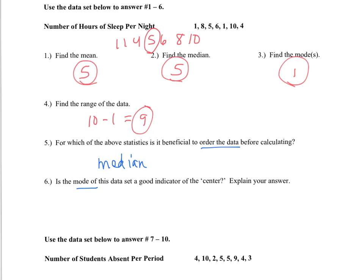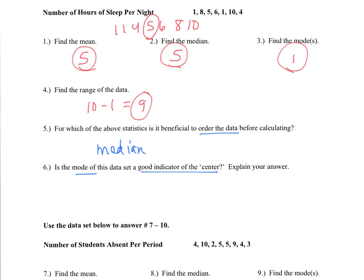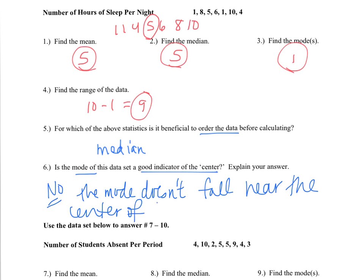Next question asks if the mode is a good indicator of center. And the answer to this would be no, it isn't. If we look at our data set and we look at our mode, our mode is 1. And even though that value occurs the most, it has nothing to do with the center of the distribution. So our answer here would be no, the mode doesn't fall near the center of the distribution.